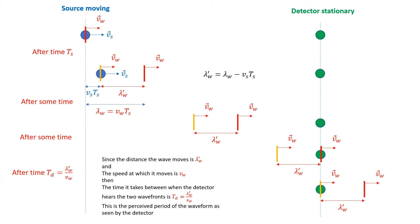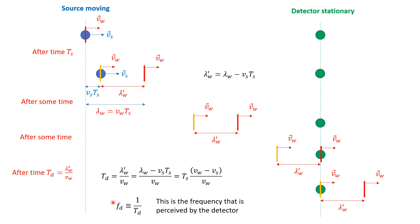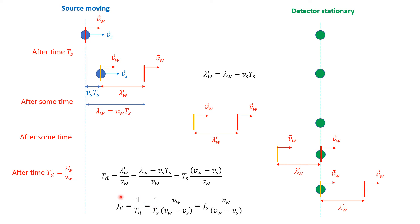That's the perceived period of the detector: λ' / v_w. Substituting λ' = λ − v_s · T_s and λ = v_w · T_s, we can take T_s as a common factor. This gives a simple relationship: the perceived frequency of the detector f_d equals the source frequency f_s times the factor v_w / (v_w − v_s).